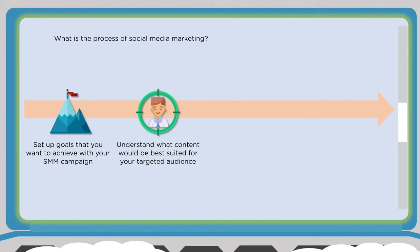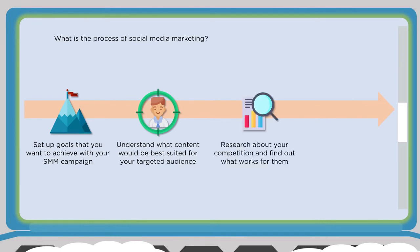You also want to research the competition and find out what works for them. On Facebook, you can always go to your competitor's page and see what they're posting and what kind of engagement they're getting. It helps to do some due diligence about your competition before you go live. You can also conduct a social media audit to see what's worked and what hasn't in the past.